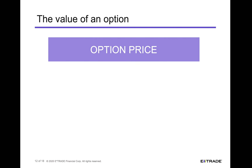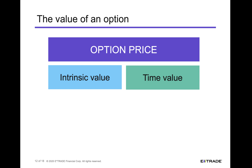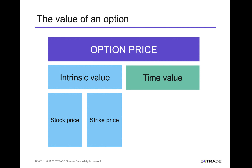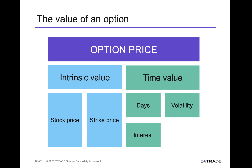Intrinsic value and time value are the two main pieces of option premium. The option price will be the sum of intrinsic value plus time value. If there's no intrinsic value, then all of the option premium is time value. To recap: intrinsic value is a function of the stock price as it relates to the strike price. Time value is a function of how many days are left until expiration and how much volatility is there in the stock. There are a couple other less influential pieces — interest rates and whether or not the stock pays a dividend. All of this goes into a model used to determine what the option premium price is, and that model serves as a good guide to understand where the price should generally be.